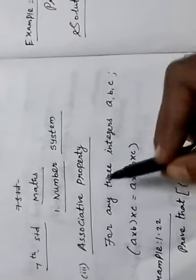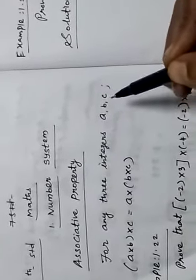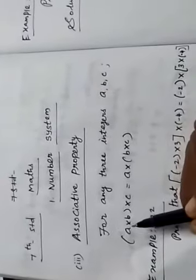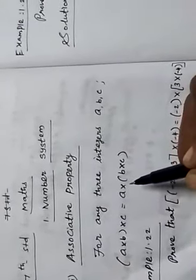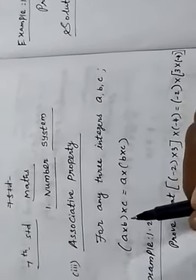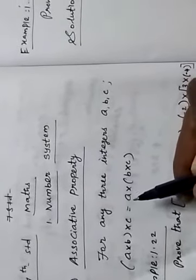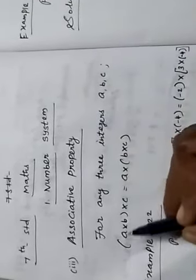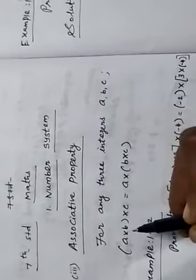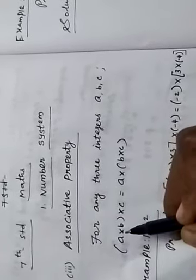Listen here. We take any three integers a, b, c. So a into (b into c) equals (a into b) into c. Why is the bracket here? Because first we find the solution for the bracket inside values, then we go to find the next integer value.